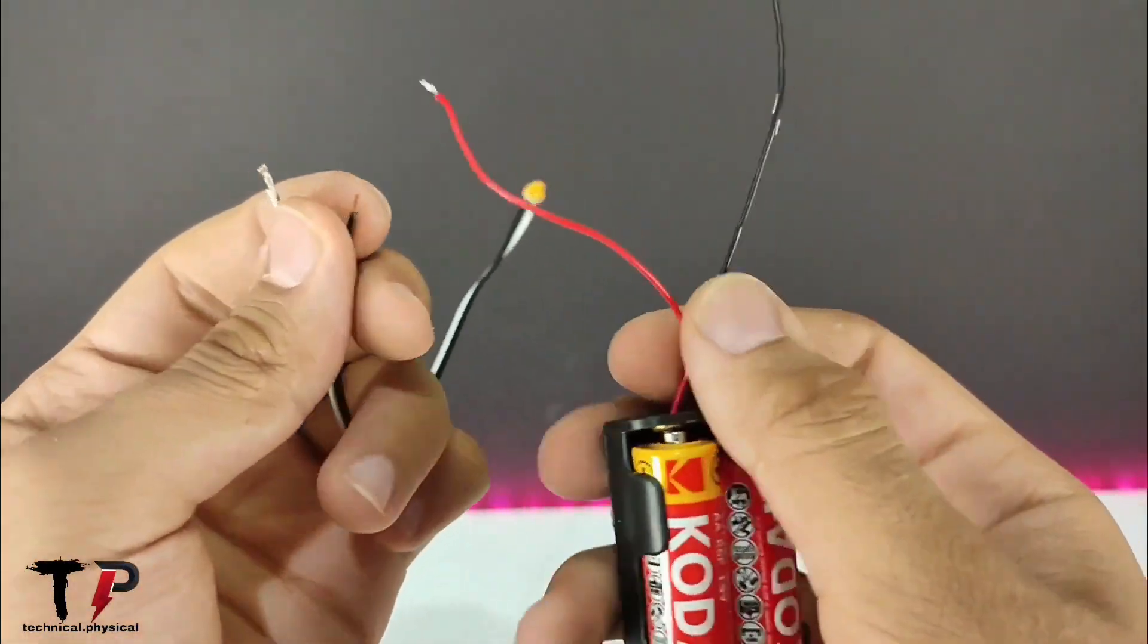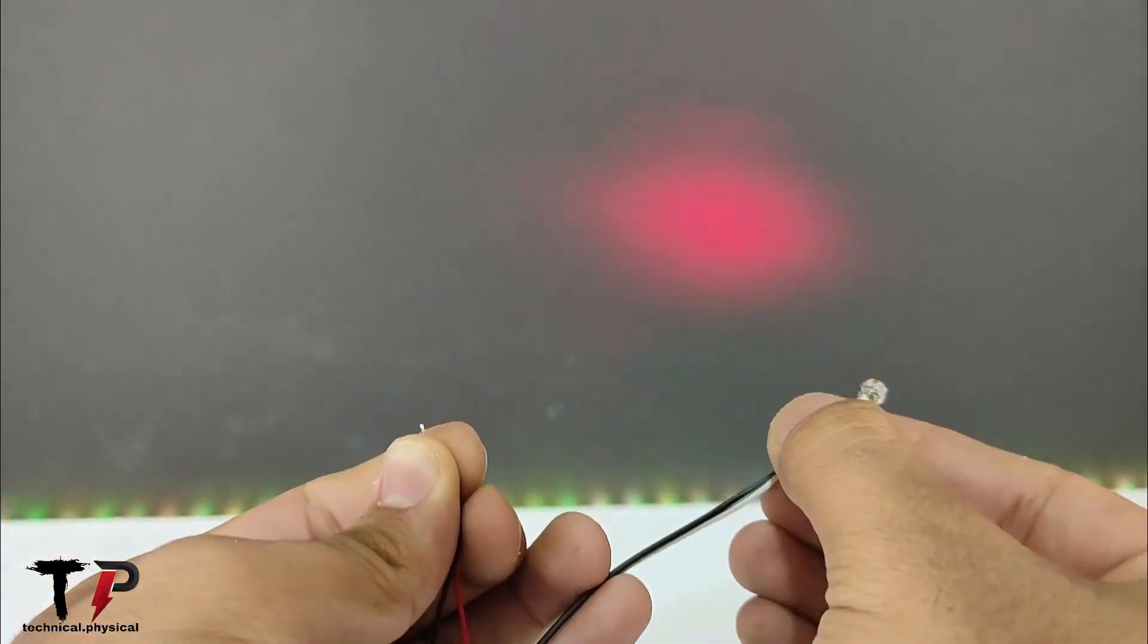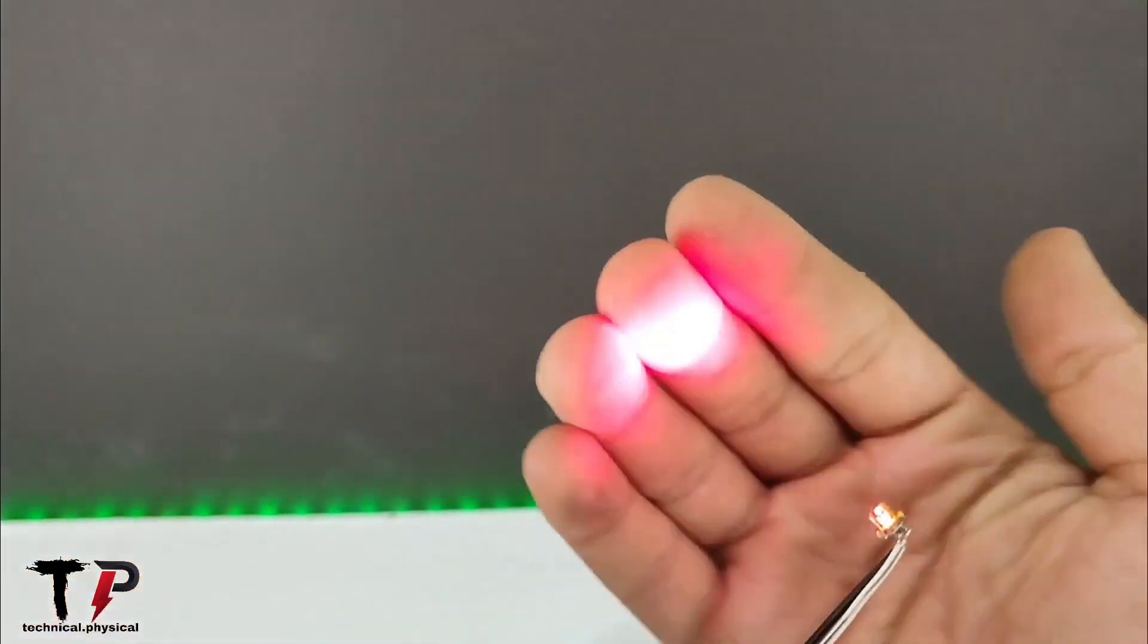After we put our own laser diode inside the DVD player and did the electrical wiring, now we have to test our diode with a battery and then design a simple circuit to increase the power of the laser.